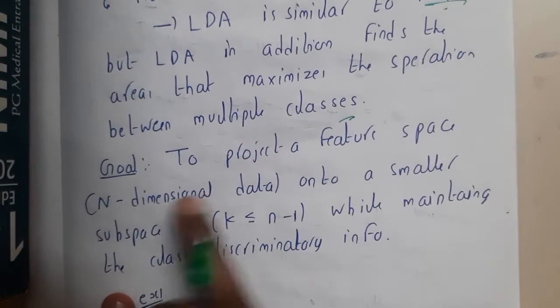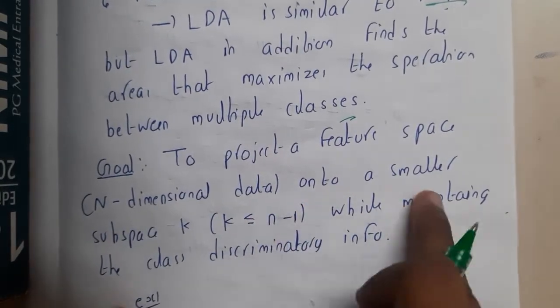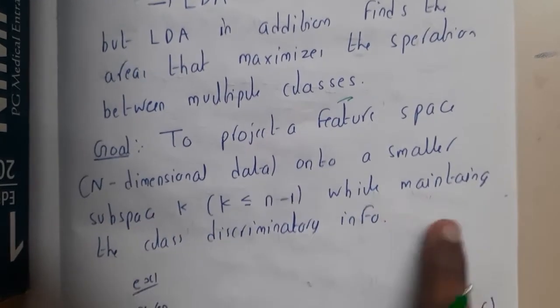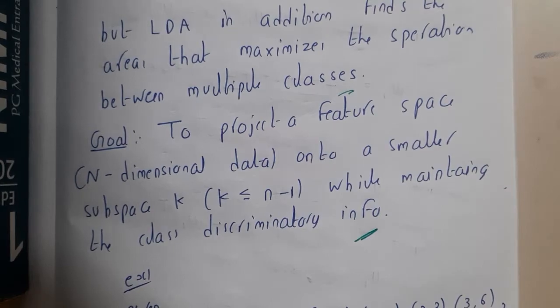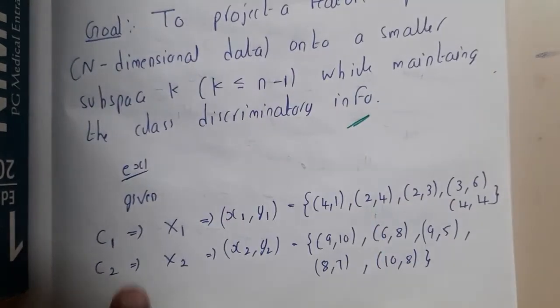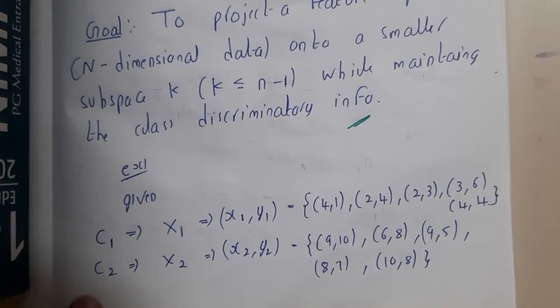The final goal is to project a feature space n-dimensional data onto a smaller sub-dimension k while maintaining the class information. So that is the main goal of this LDA. The final goal of both of them is almost the same.